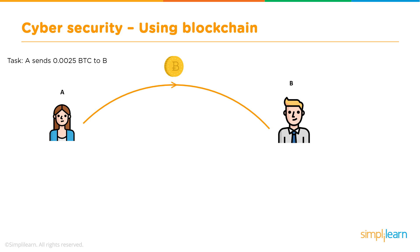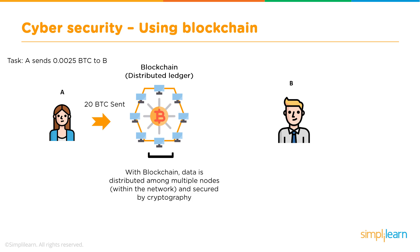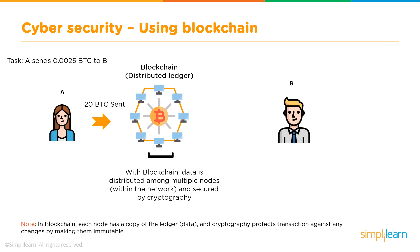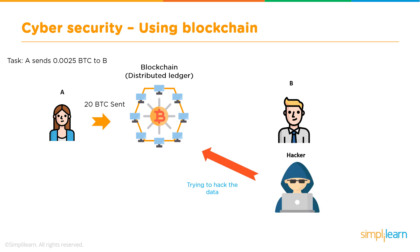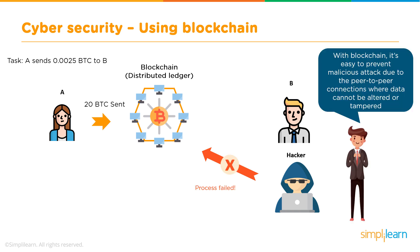Now let's look at the same scenario with the help of blockchain. A is sending 0.0025 bitcoins to B, which amounts to approximately twenty dollars. These bitcoins are sent and blockchain — a distributed ledger — distributes the data across multiple nodes within the network and secures it using cryptography. Each node has a copy of the ledger, and cryptography protects the data against any changes, making it immutable. A hacker attempting to hack the data is unsuccessful because the peer-to-peer connection prevents data from being altered or tampered.